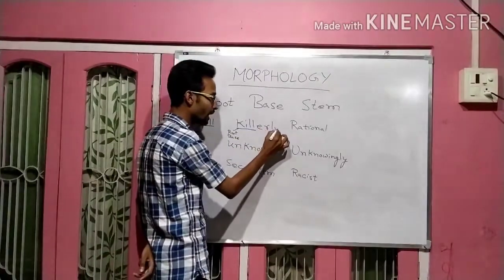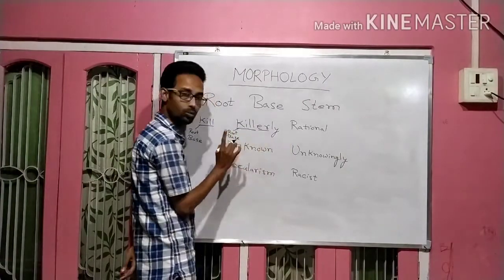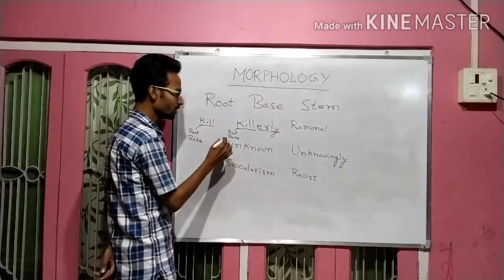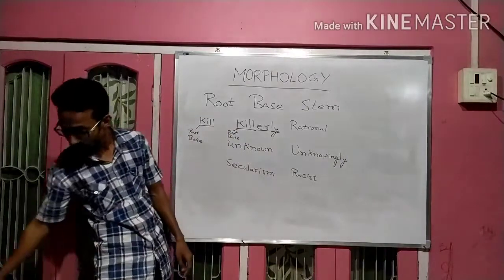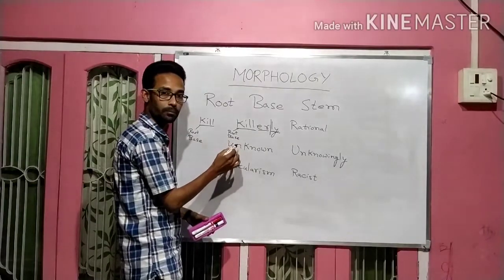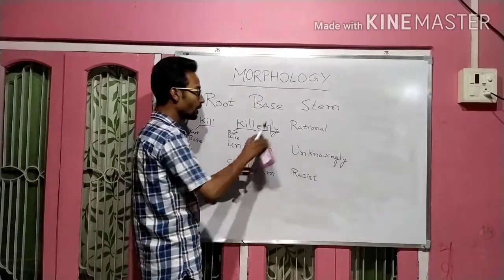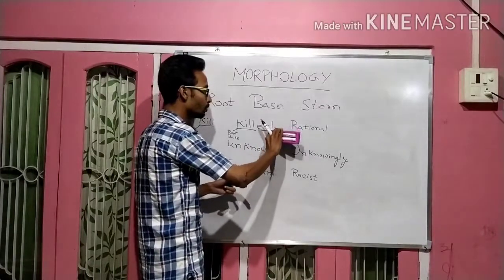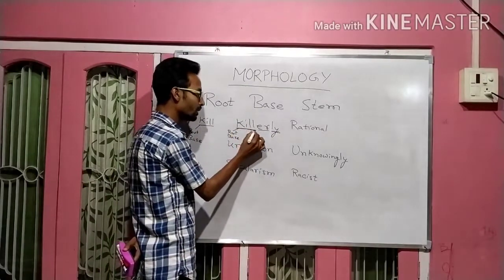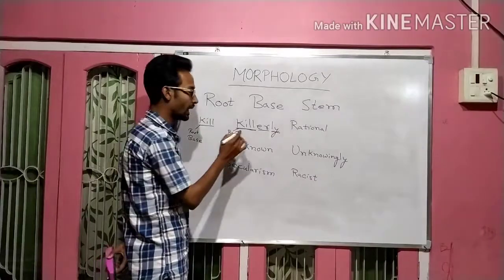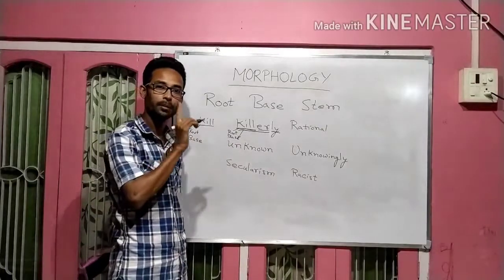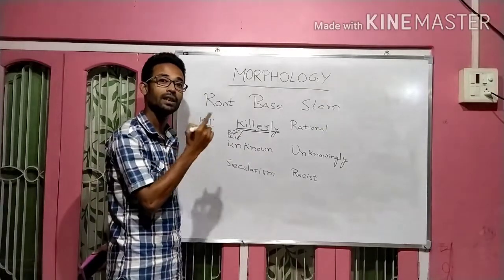But if we add another morpheme — because in 'killer' there were two morphemes — let's make it three: 'killerly.' Now, when it was 'killer,' the root and the base were the same. When we add another morpheme to make 'killerly,' kill will be the root, and killer will be the base.